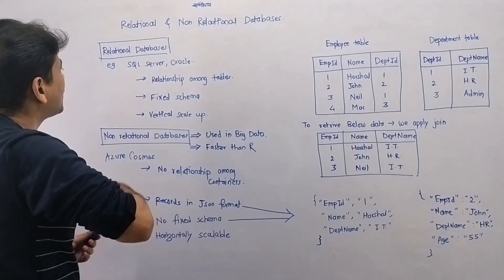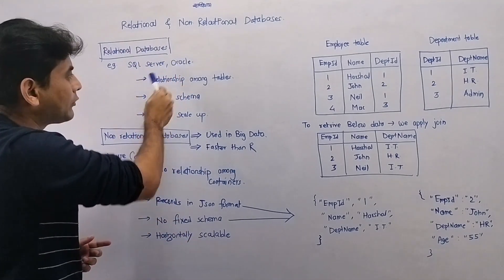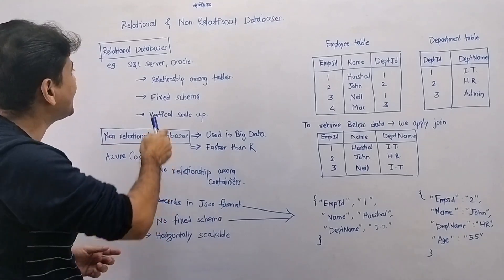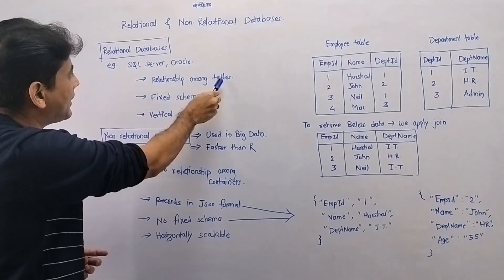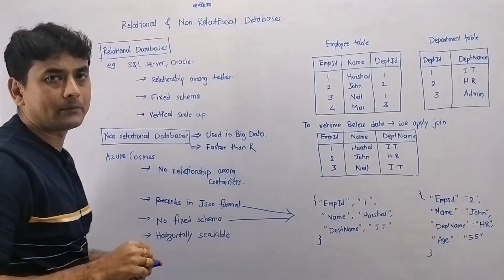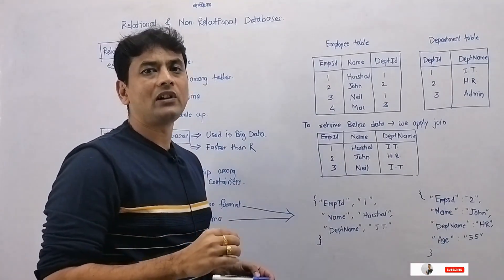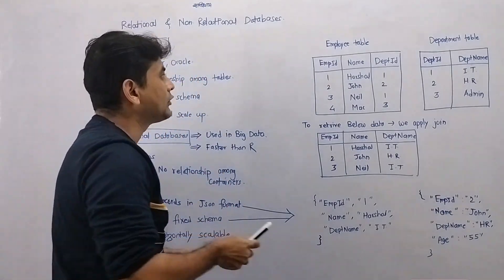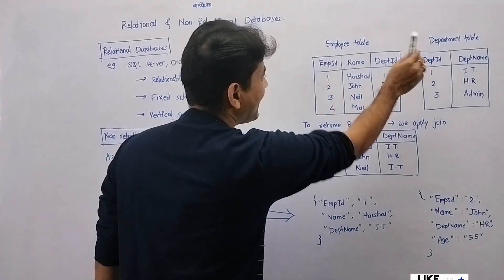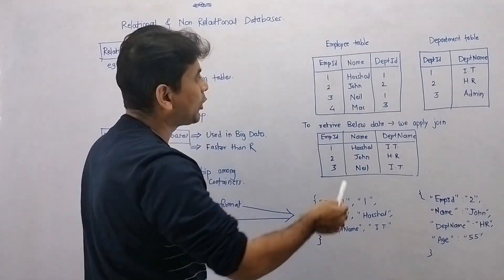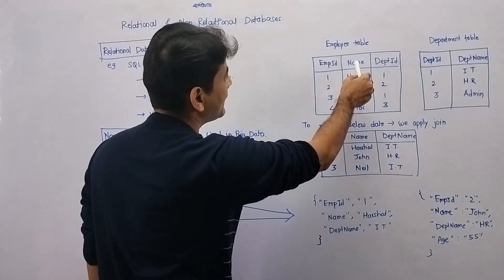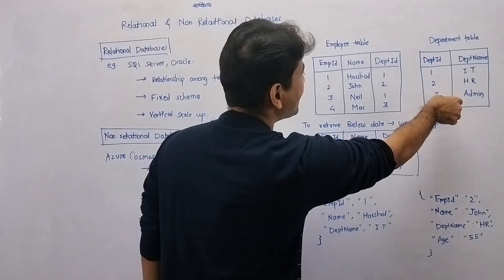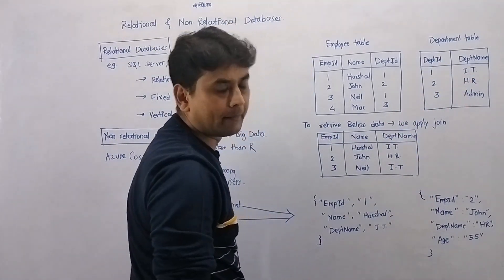We have Microsoft SQL Server or Oracle as examples of relational databases. The first thing is there is a relationship among the tables in relational databases. We have two tables — employee and department. In the employee table, we have columns employee ID, name, and department ID. In the department table, we have columns department ID and department name.